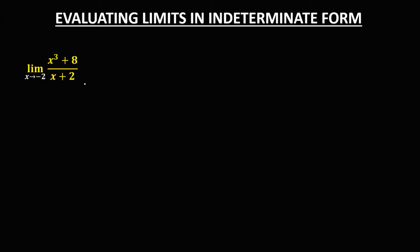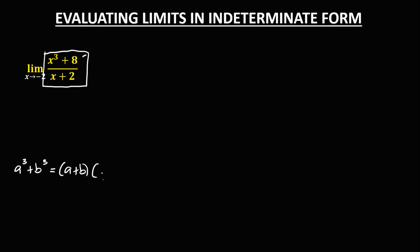For this next given, we need to reduce using the sum of two cubes formula. If we have a cubed plus b cubed, we can factor it as (a + b)(a squared minus ab plus b squared).